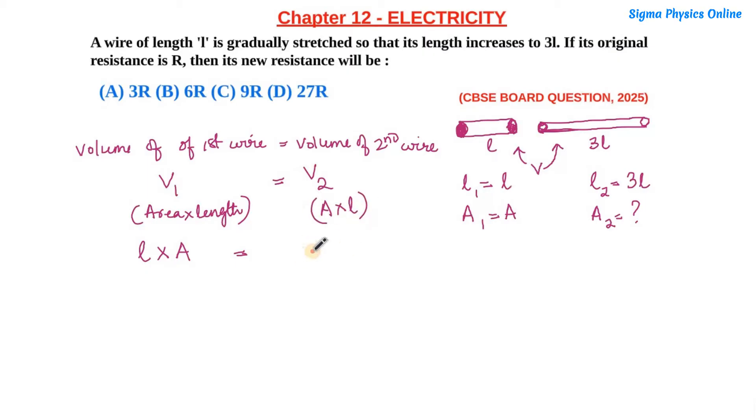So l × A = 3l × A₂. The l cancels out, giving us A/3 = A₂. Therefore, the area of cross-section of the second wire is one-third of the area of cross-section of the first wire. So A₂ = A/3. Now we need to find the new resistance.